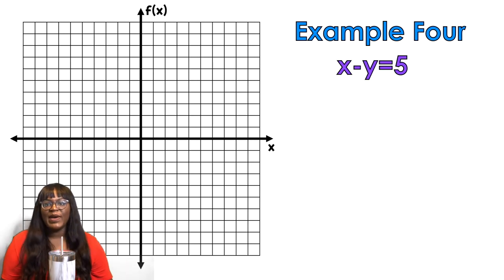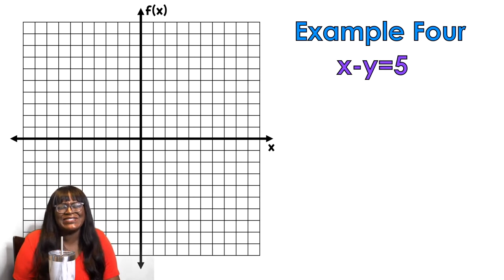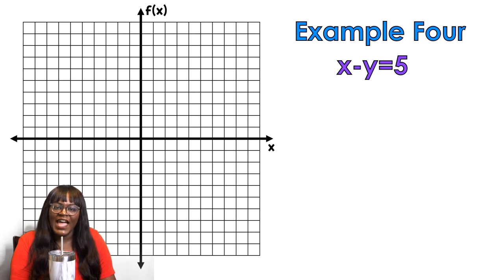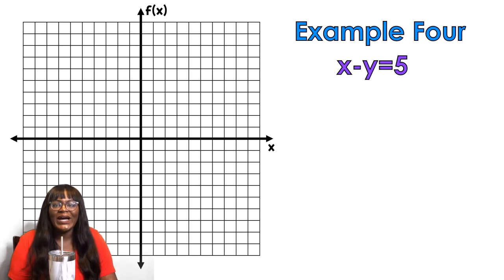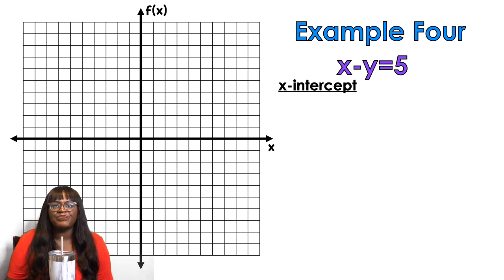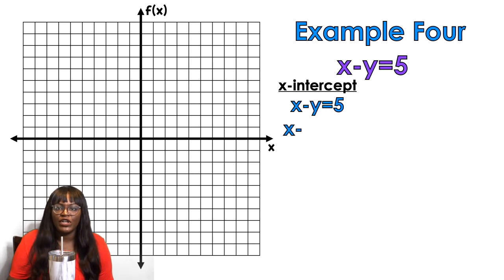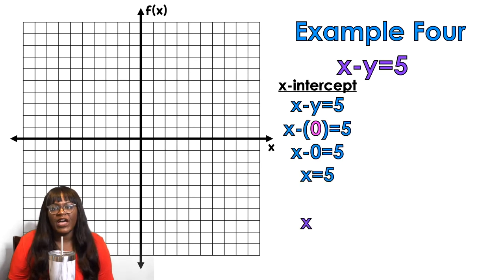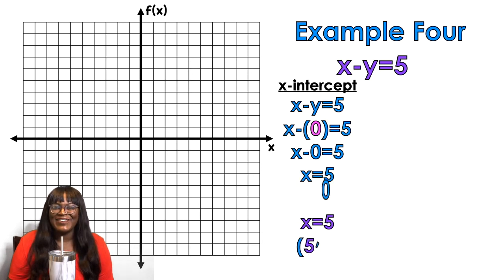For example four: x minus y equals 5. Sometimes students freak out because there are no visible coefficients, but the imaginary number in front of x is 1 and in front of y is 1 — just put a 1 there if that helps you. For the x-intercept, plug in 0 for y. x minus 0 equals 5, so x equals 5. My coordinate is (5, 0).